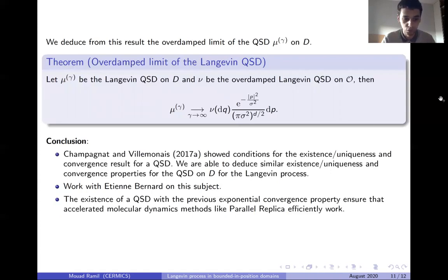As a matter of conclusion, I will give some references on similar works on QSD. Champagnat and Villemonais have worked on conditions for the existence and uniqueness and convergence results for QSD for general Markov processes. Working with them, we were able to use similar results for existence, uniqueness, and convergence for QSD for the Langevin process, and this is a work we are going to submit soon.